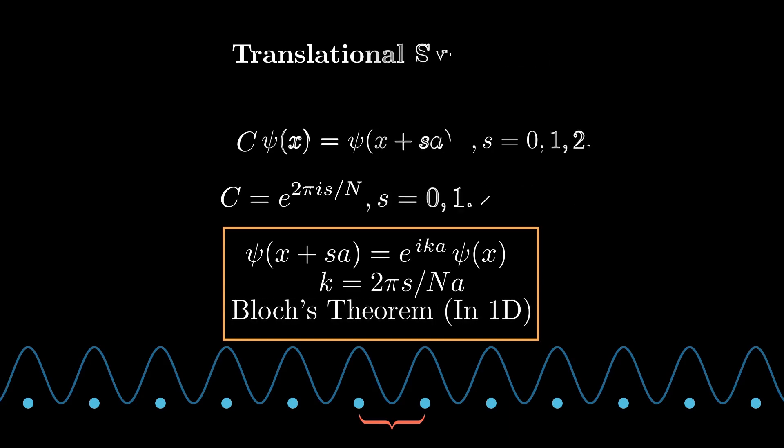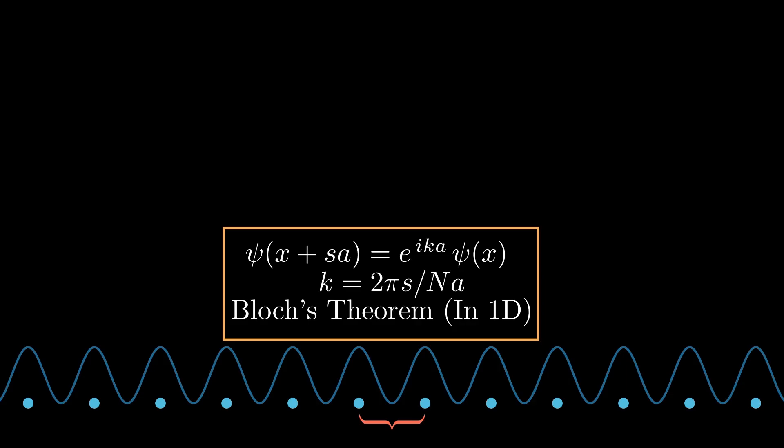Now there is a different representation of Bloch's theorem that we can derive from our results so far. This new representation will tell us exactly what form psi of x takes. Now if you were to just guess that, you might guess something like e to the i k x. And in fact, this does meet our boundary conditions.